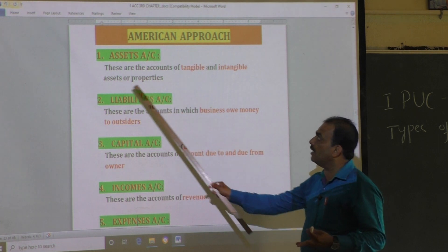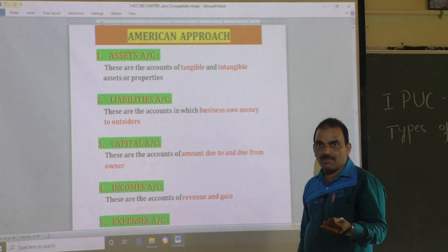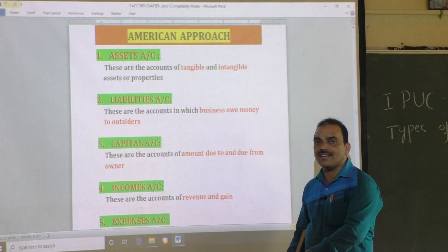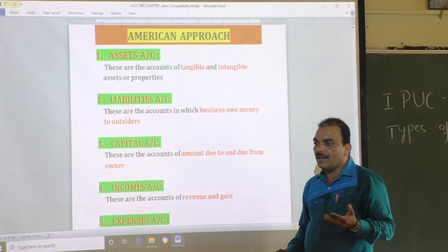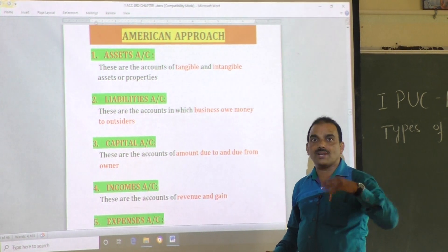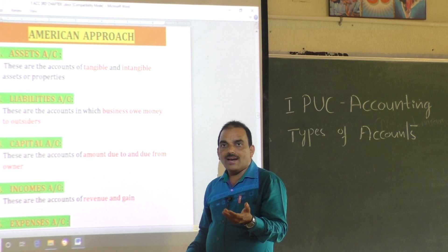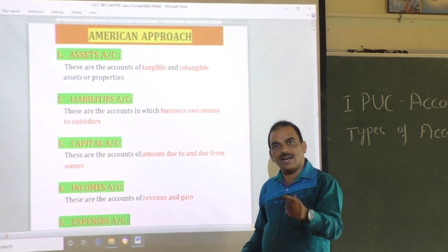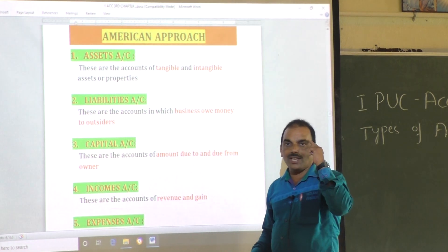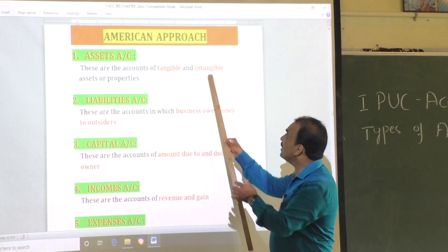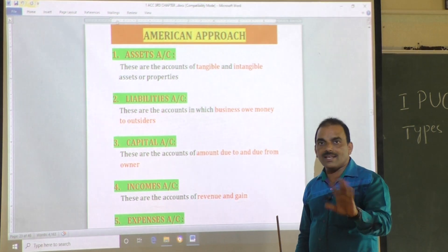Tangible and intangible assets are properties. For example, in our general life: cash is tangible, building is tangible, a car or vehicle is tangible. Our life — our soul — is intangible, and our knowledge is also intangible. These are examples not from business but from general life.